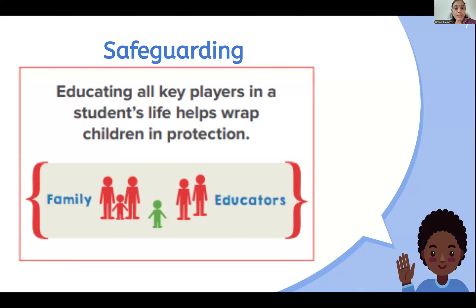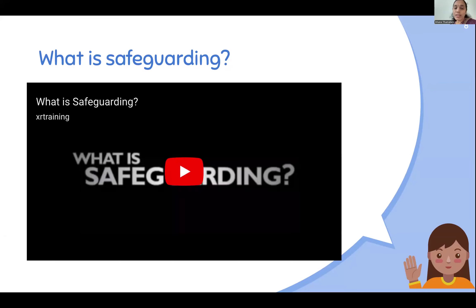What is safeguarding? This is the third key term. Safeguarding means having the policies, practices, or systems in place to prevent children from harm. In the process of safeguarding, it is important that we educate all the key players — both family and educators — giving them proper awareness on child protection and safeguarding to prevent children from harm and risk. Here is a short video to help us understand what safeguarding is and the types of child abuse.